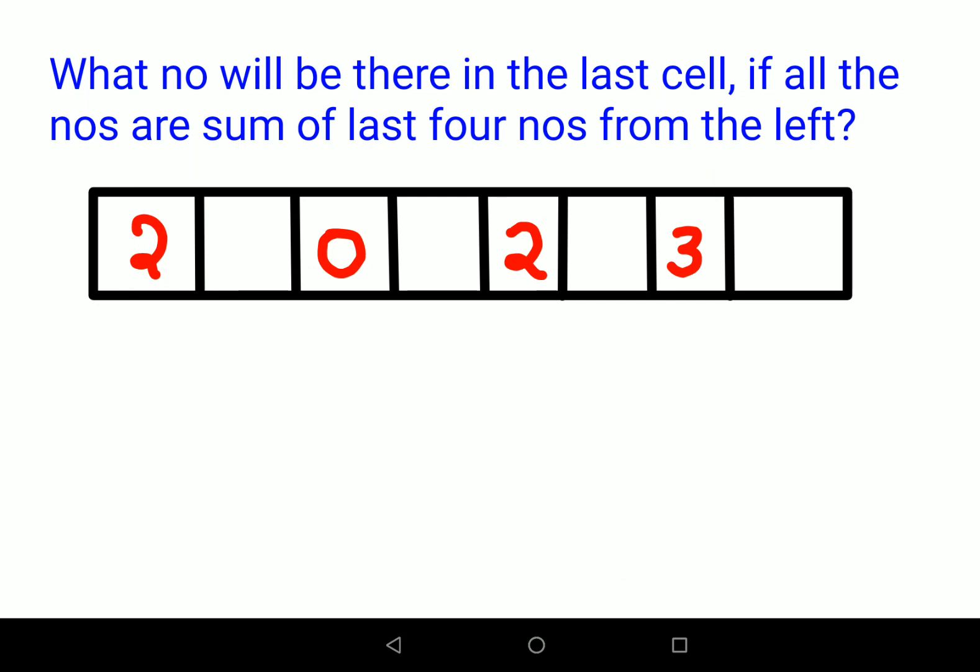Now the puzzle says that they have given us 2, 0, 2, 3. This is like a box and in between also there are gaps. Now they are saying what number will be there in the last step. So this is the place where we need to find. Let's keep this as x. If all the numbers are sum of last 4 numbers from the left.